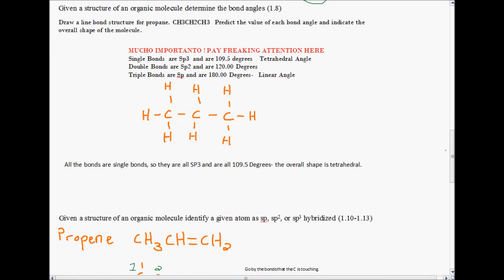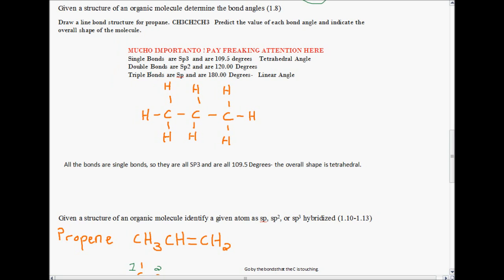Given a structure of an organic molecule, determine the bond angles. Draw a line bond structure for propane. CH3CH2CH3. Predict the value of each bond angle and indicate the overall shape of the molecule. Now, here's a little table. Memorize this. Single bonds are SP3 and are at 109.5 degrees. That's called a tetrahedral angle. Double bonds are SP2, and they are 120 degree angles. Triple bonds are SP. These are 180 degree angles, also called the linear angle.